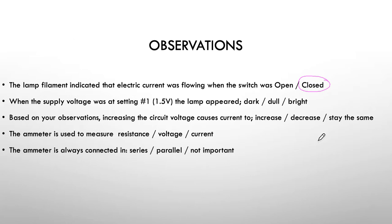When the supply voltage was at a setting of number one or at 1.5 volts, what was the lamp appearance? Was it dark, so was it off, was it dull, was it bright? So at 1.5 volts, if you remember, it wasn't off but it was dull.